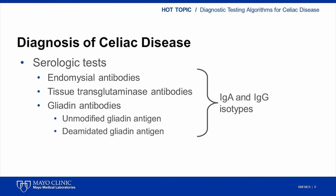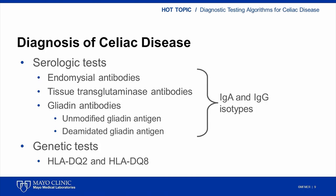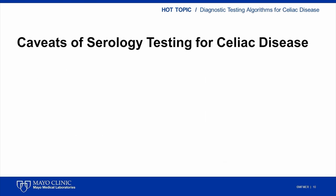Testing for each of these antibodies can involve either IgA or IgG isotypes. TTG and deamidated gliadin antibodies are generally detected using plate-based enzyme immunoassays, although bead-based multiplex assays are becoming more common. EMAs are detected by immunofluorescent assays using smooth muscle tissue such as monkey esophagus substrate. In addition to serology, genetic testing can be useful in the evaluation of a patient with suspected celiac disease, focusing on the presence of HLA-DQ2 and HLA-DQ8 alleles. It is important to appreciate the limitations of each type of testing.